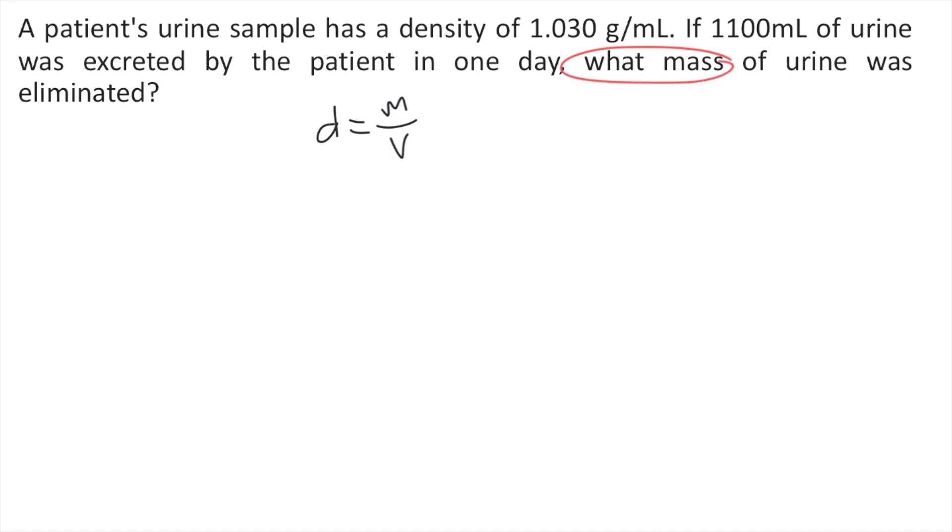What you want to do is rearrange the equation to get the mass. You multiply both sides of the equation by v, so v cancels on the right side. Our equation becomes mass equals volume times density.